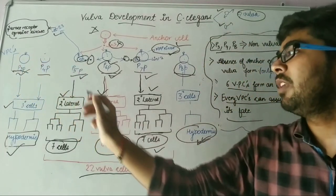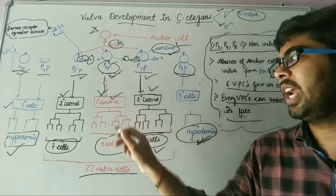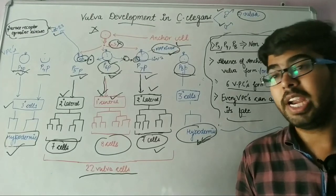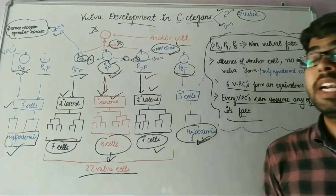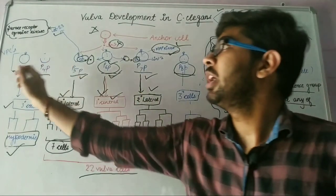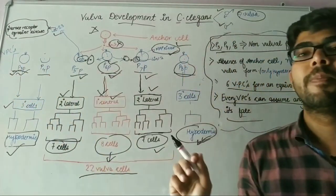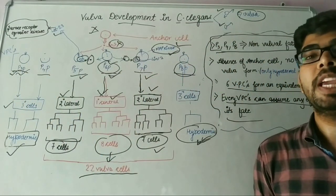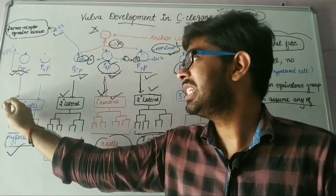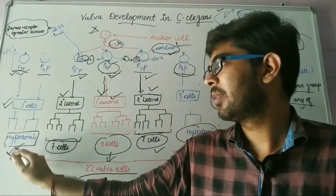But when P6P is found at P3P position, then P6P will produce tertiary cell fate and lead to hypodermis.